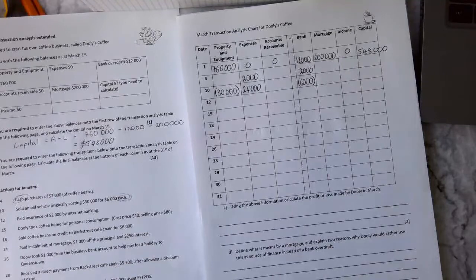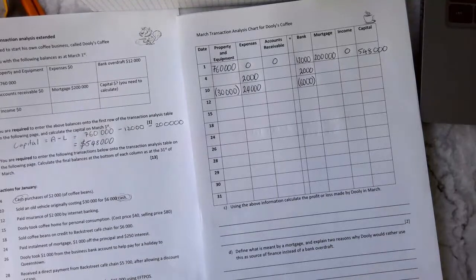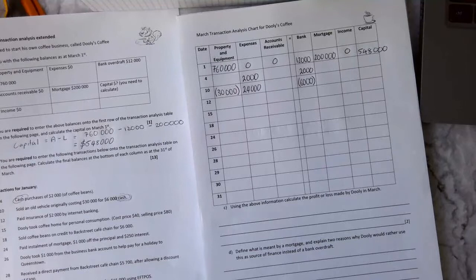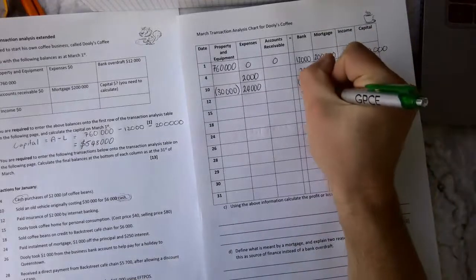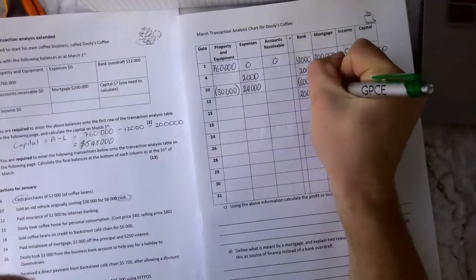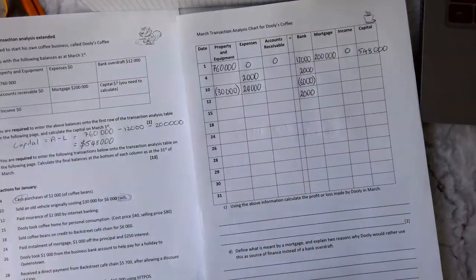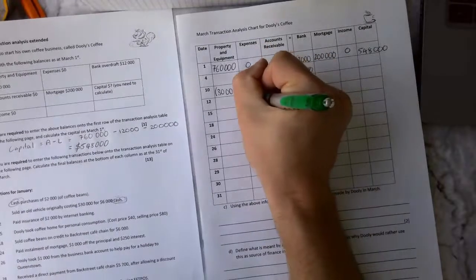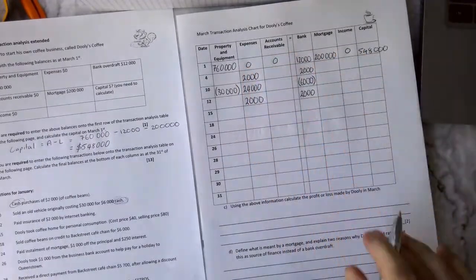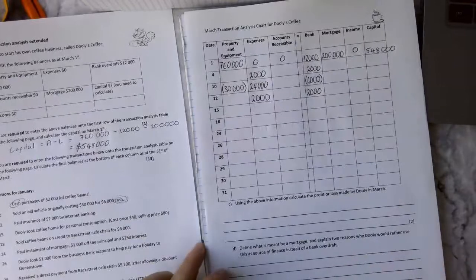Number 12, we paid insurance of $2,000 by internet banking. So internet banking is an automatic payment from our bank account. So again, we can put $2,000 straight away into our bank. And insurance is an expense, so that's going to come into this column here.